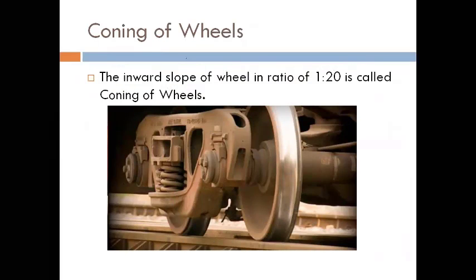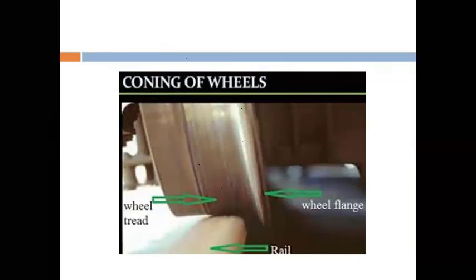Next is coning of wheels. Rail wheels are not flat, and rails are not flat either. They are provided with an inward slope of 1 in 20 — this is called coning of wheels. The flow of metal defect also occurs because the majority of rail usage is on one half side. The train going left to right and right to left compensates both sides, but if only one side is used, flow of metal will definitely occur.